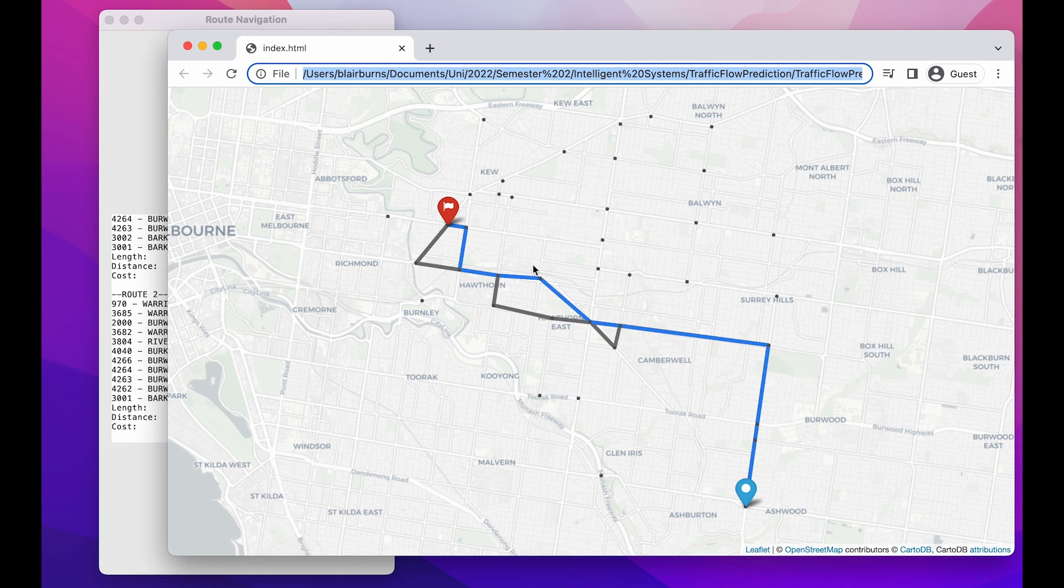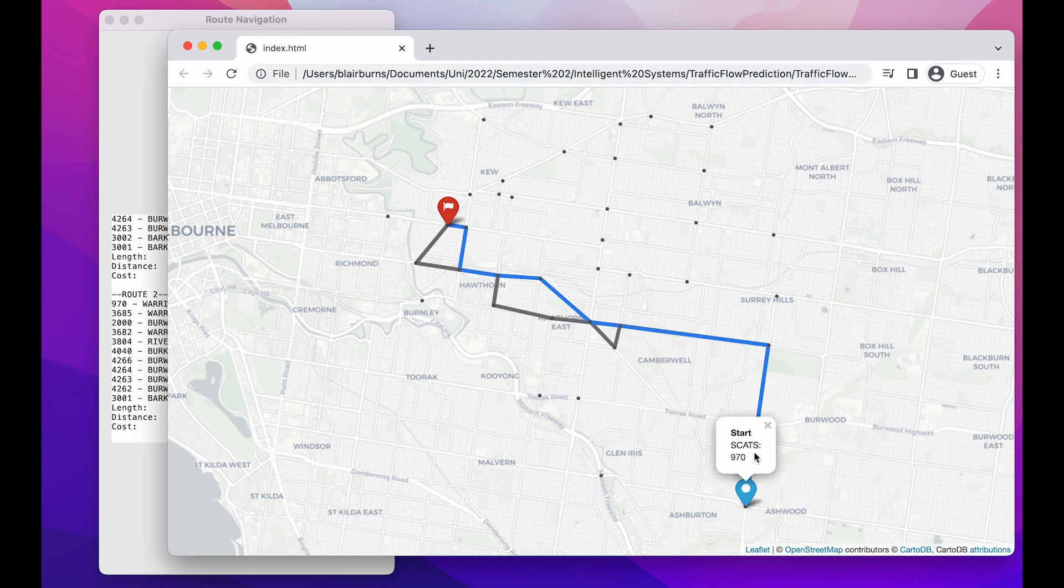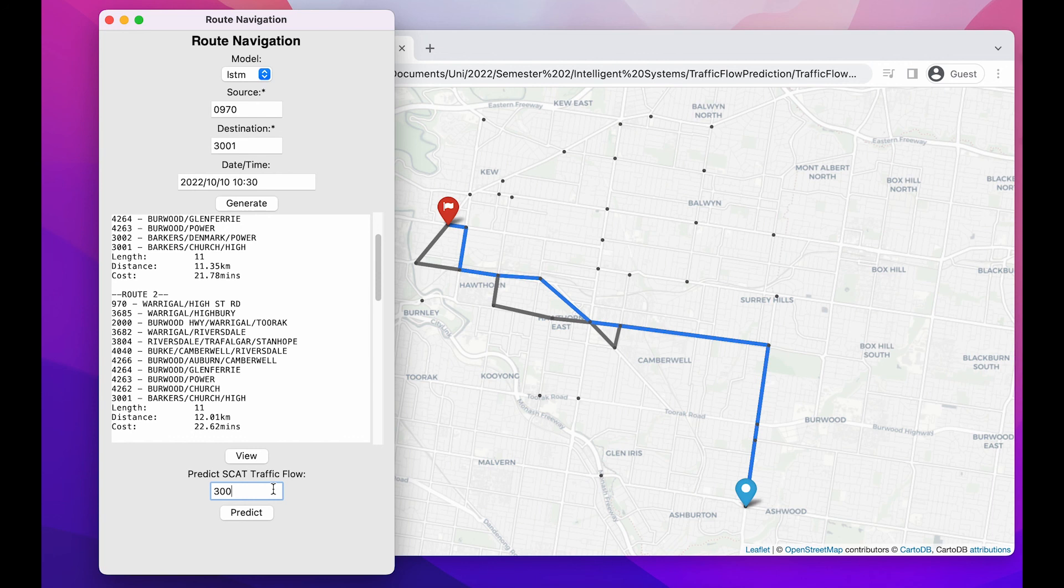You're also given the option to enter a single SCATS location, and alongside the date and time, you can predict the current traffic flow for that point. And you're given that value in terms of vehicles per hour.